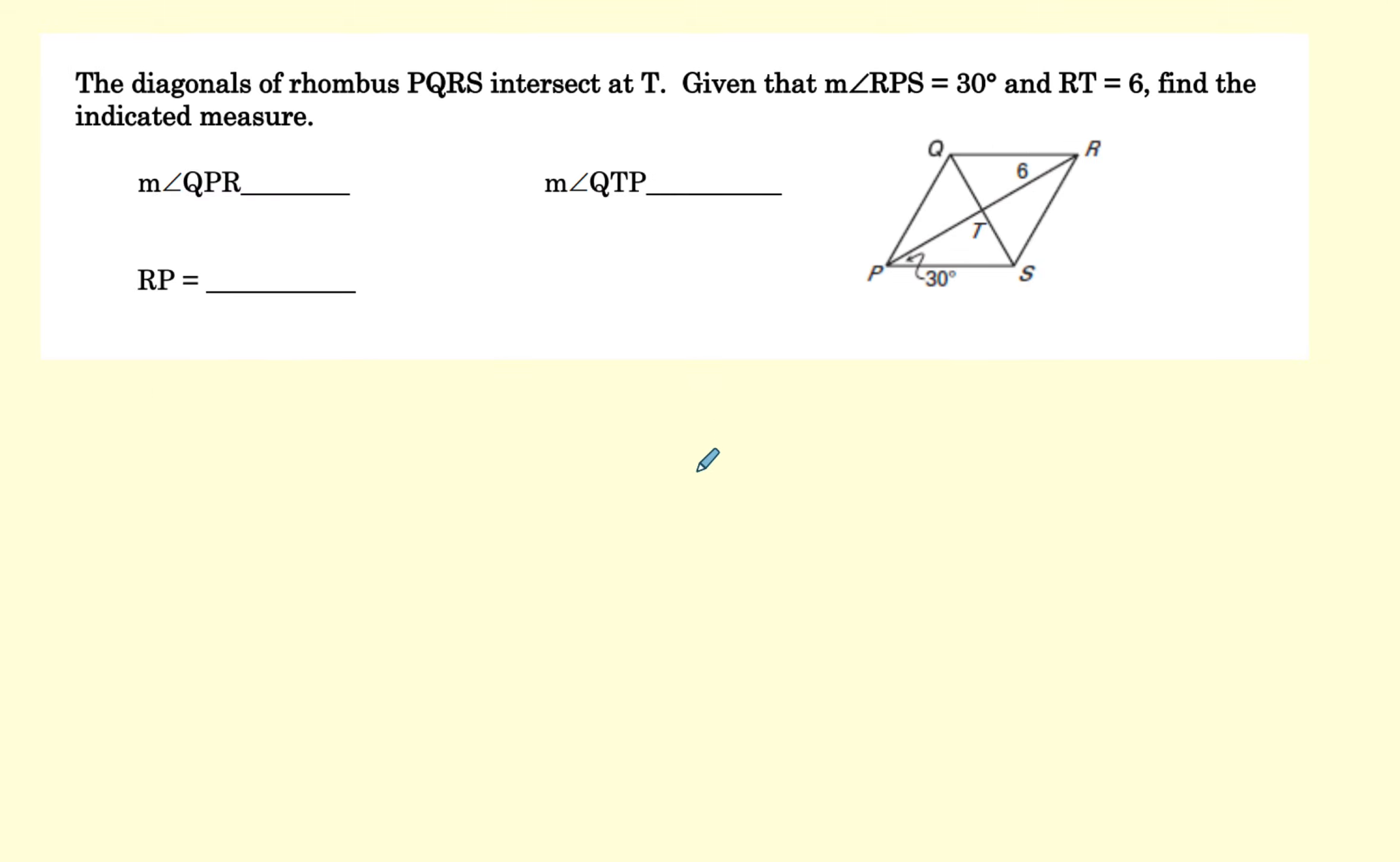This is a rhombus. And I know a rhombus, the diagonals bisect these angles, and I know I have a right angle right here. So let's go ahead and see if we can figure out angle QPR. QPR, so that other side will be 30 degrees. And then angle QTP, we know that's going to be a 90 degree angle. And then RP. Remember this is 6 and they get bisected, so that's going to be 12.